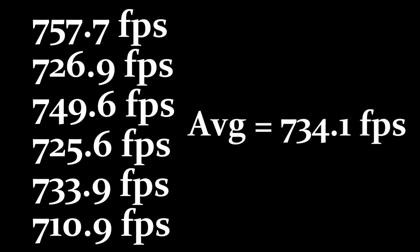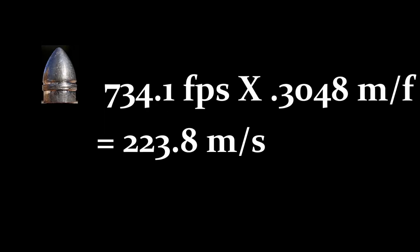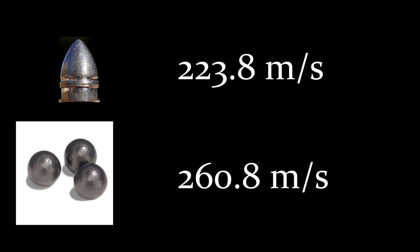With our velocities here, we've got six of them, six shots. Add them all up, divide by six, and we ended up with an average of 734.1 feet per second. Multiply that by our factor of 0.3048 meters per foot and we end up with 223.8 meters per second. So our conical bullet is moving slower than our round ball.